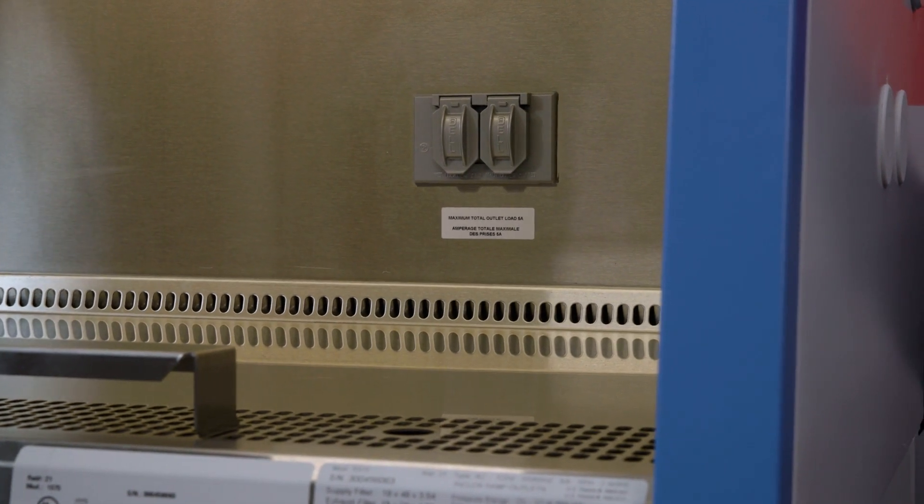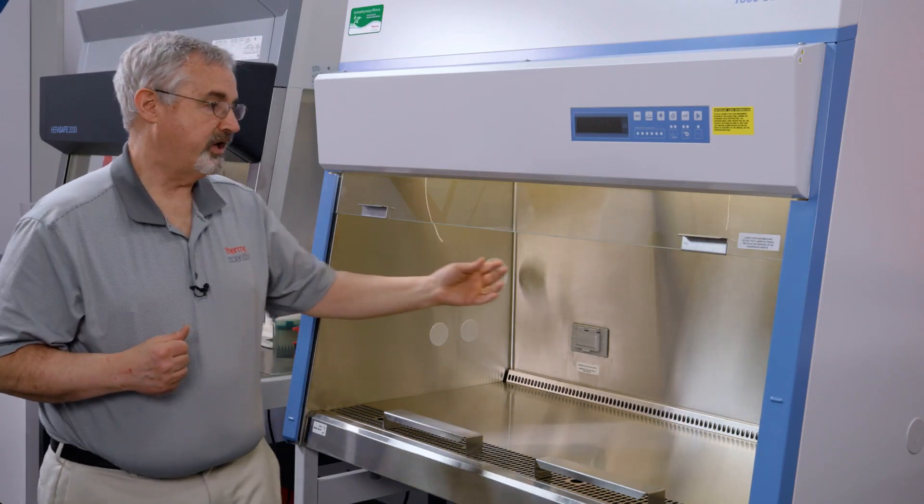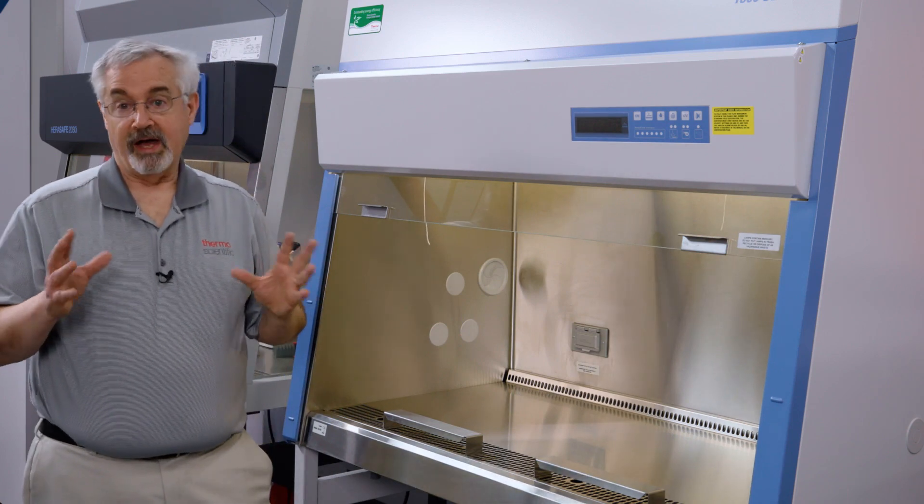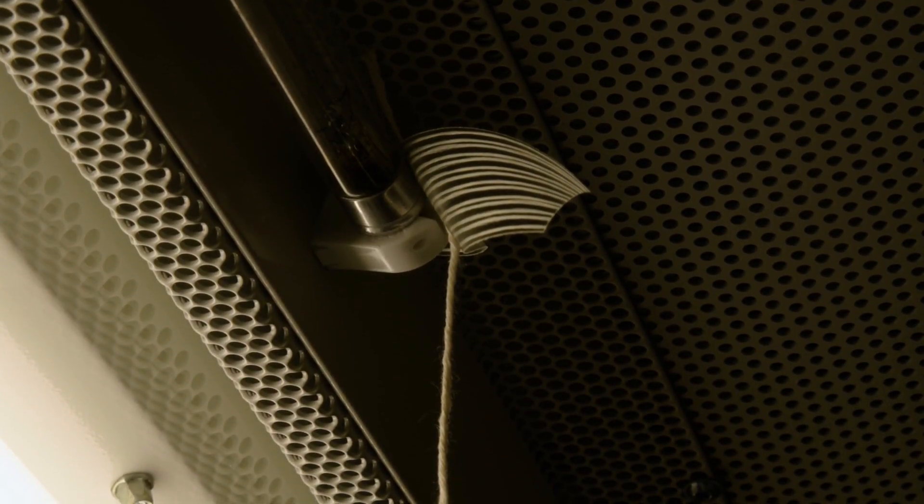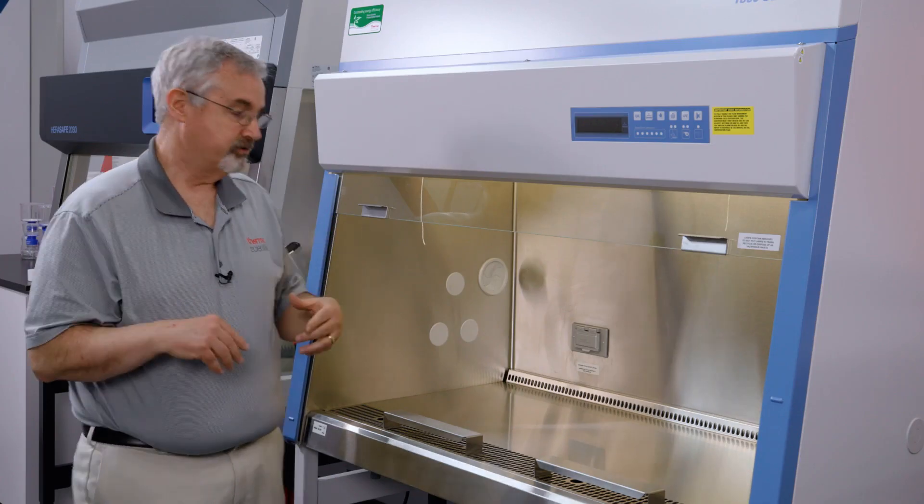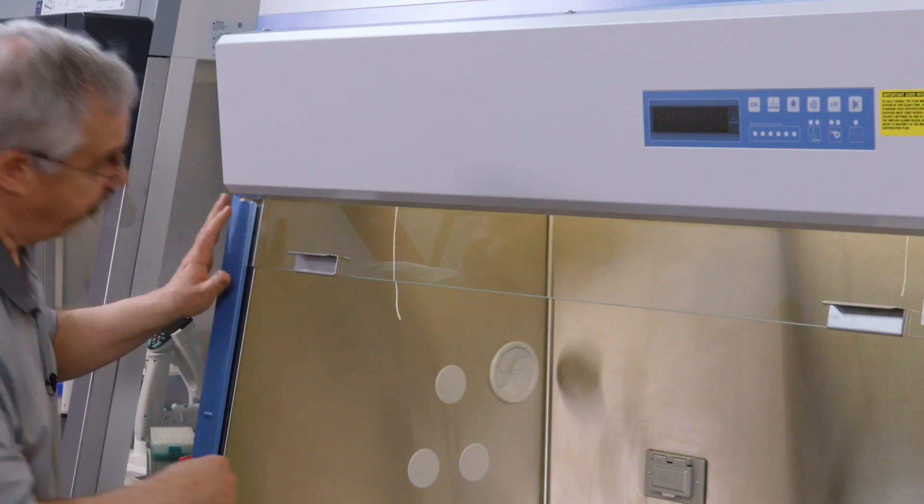There's two things we have to do still. You'll notice these two strings hanging down. They are to remind us that there's small bits of tape holding the UV germicidal light in place for shipping. So for units with UV you will find these and now we'll remove that.